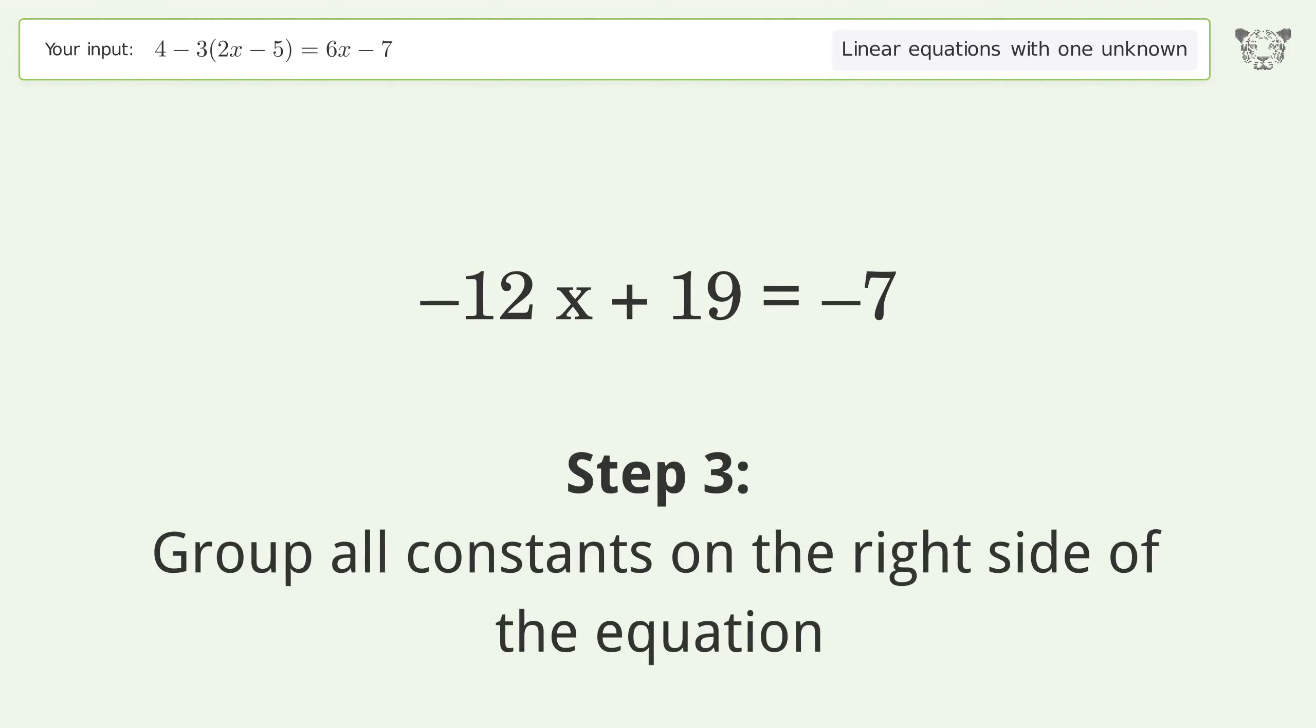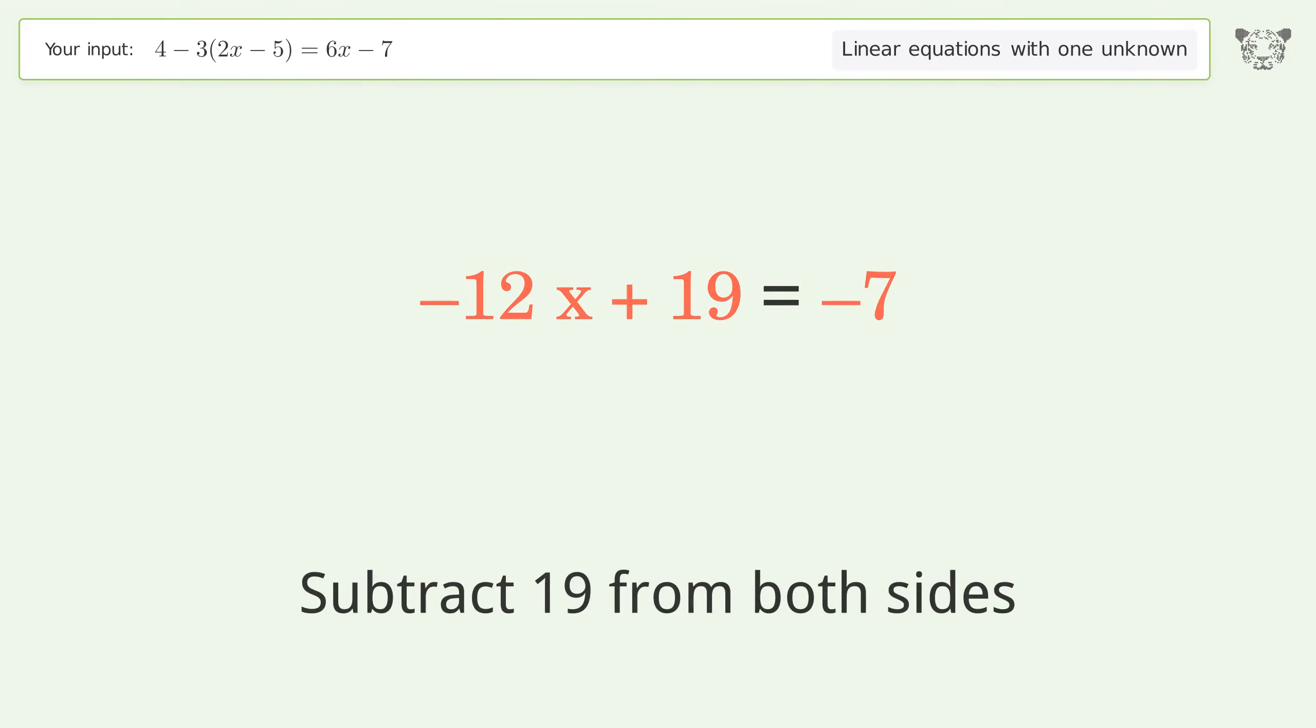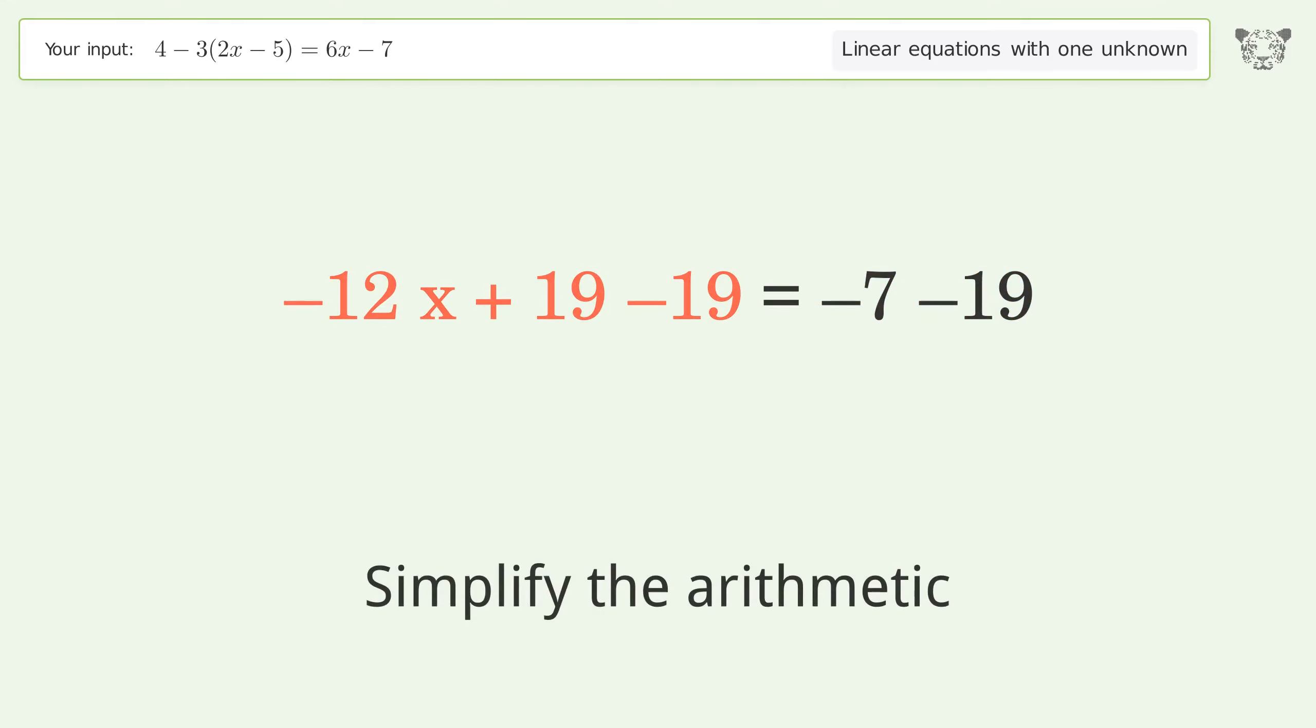Group all constants on the right side of the equation. Subtract 19 from both sides. Simplify the arithmetic.